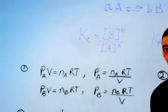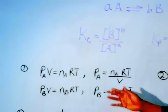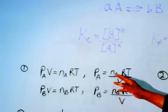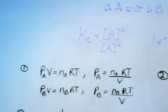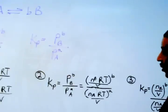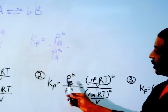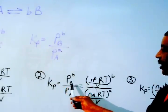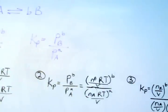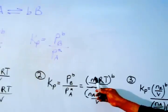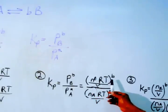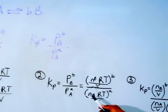Solving the ideal gas law in each case for pressure, we get the following relationship: P_A is equal to n_A × R × T over V, and P_B is equal to n_B × R × T over V. The next step is to insert the partial pressures into the Kp expression, where Kp is equal to the partial pressure of product B raised to the b power, divided by the partial pressure of reactant A raised to the a power.